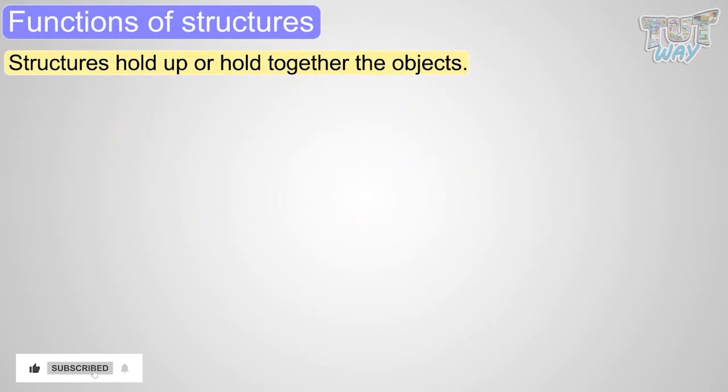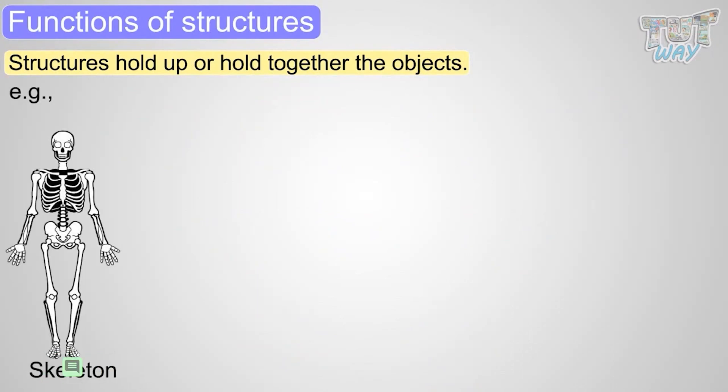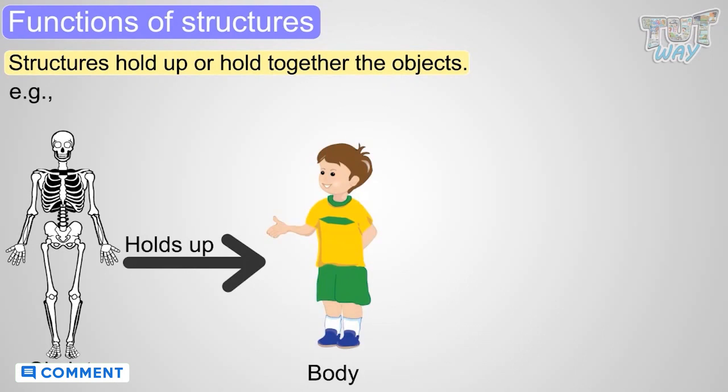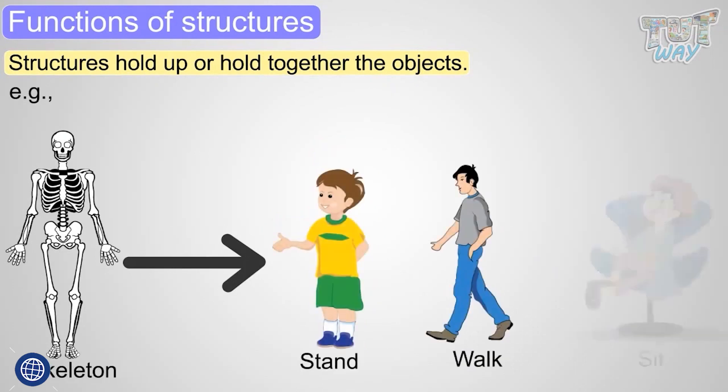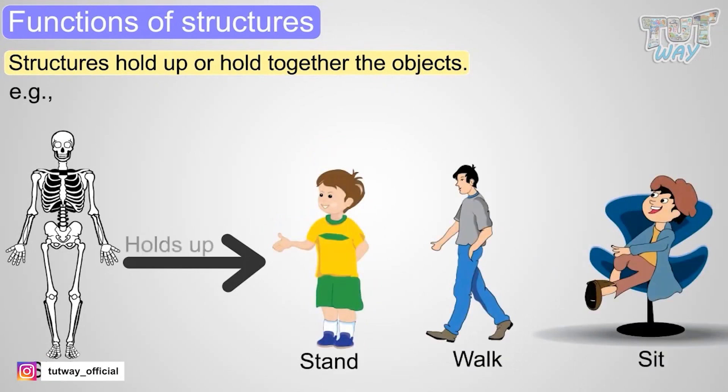Structures hold up or hold together the object. For example, our skeleton is a natural structure that holds up the body. It's the structure of our bones because of which we can stand, walk, and sit. Our skeleton holds up and holds together our body.